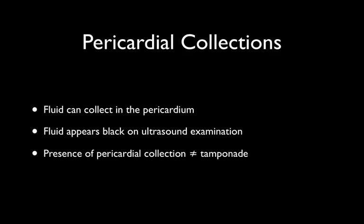Fluid can collect in the pericardium and will appear as a black space around the heart and within the pericardial sac, unless it's composed of more fibrous tissue, fibrous strands, or clot, in which case there's a variety of grey shades that may be represented by the collection. However, the presence of a pericardial collection does not equate to tamponade.